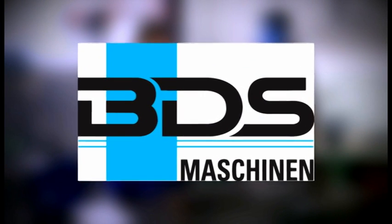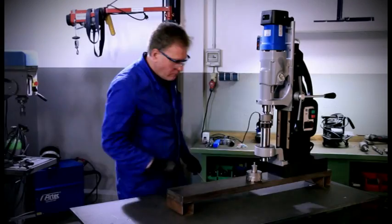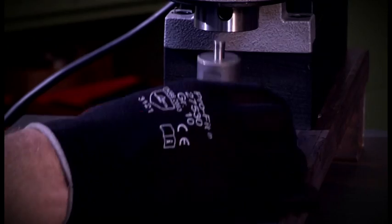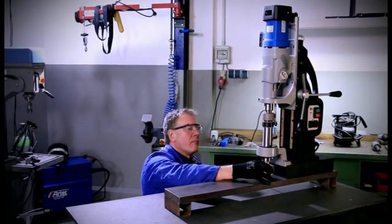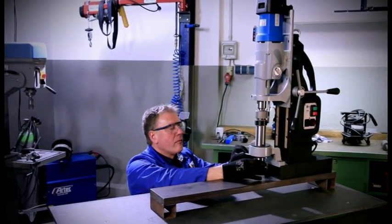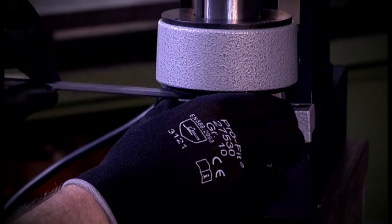Drilling, countersinking and thread cutting with the MAB1300, a magnetic core drilling machine from BDS. In the following we explain the application of our magnetic core drilling machine MAB1300.